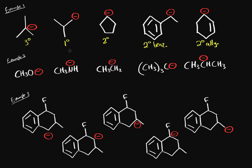Which one's more stable? A carbanion is just extra negative charge, and you want to get rid of that negative charge — either through resonance or with electron withdrawing groups. Carbons are actually electron donating groups, so a tertiary carbon surrounded by carbons has three carbons donating their electron density to it, which is exactly what you don't want. So a tertiary is worse than a secondary, which is worse than a primary. But if it's resonance stabilized, it helps distribute that charge, making it more stable.